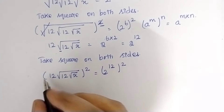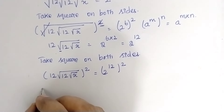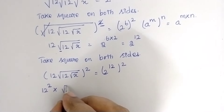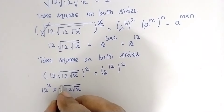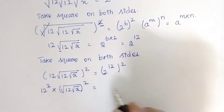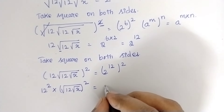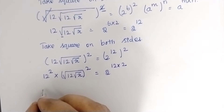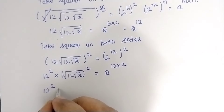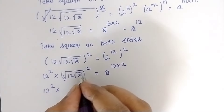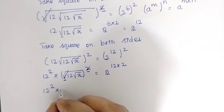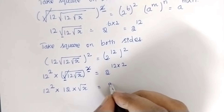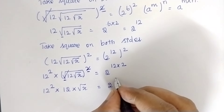By doing this, the square gets separated: 12² multiplied by the square root of 12x, the whole squared, which is equal to 2^(12×2). The root and square cancel, so we have 12² multiplied by 12x, which gives 12 multiplied by the square root of x, equal to 2^24.